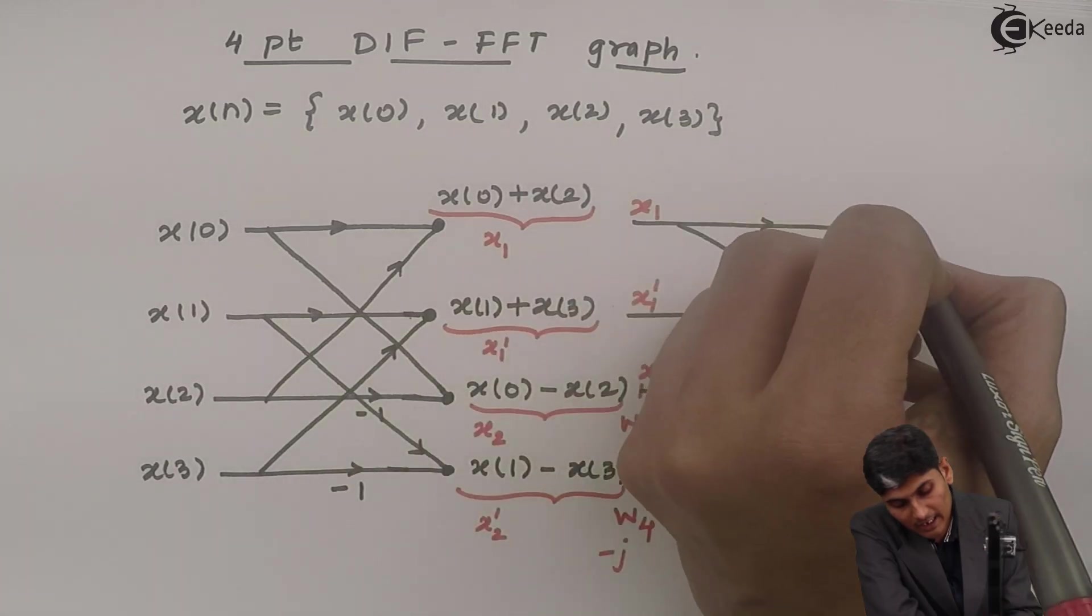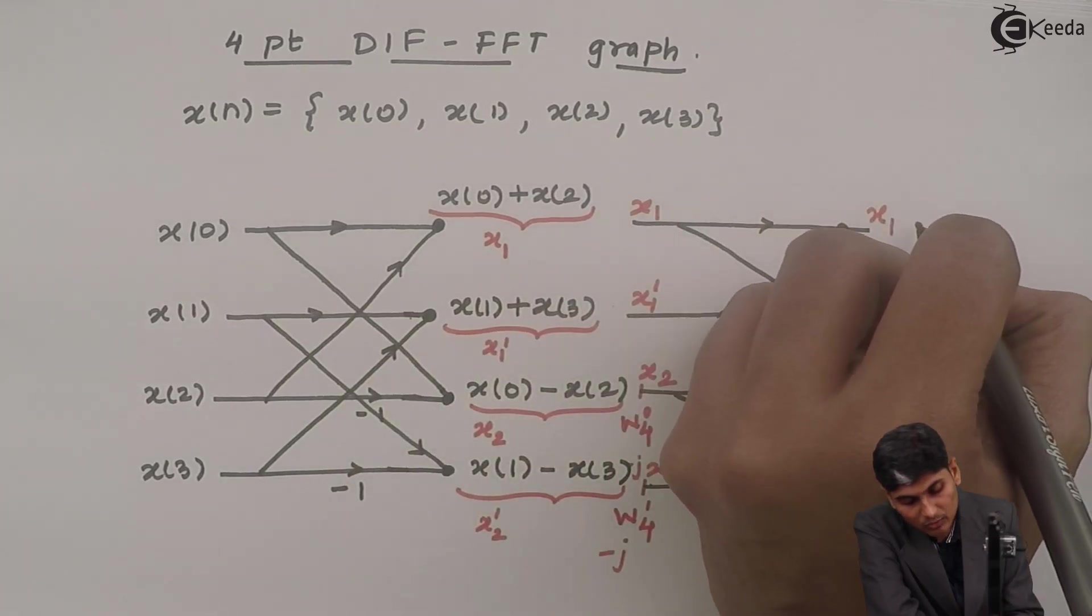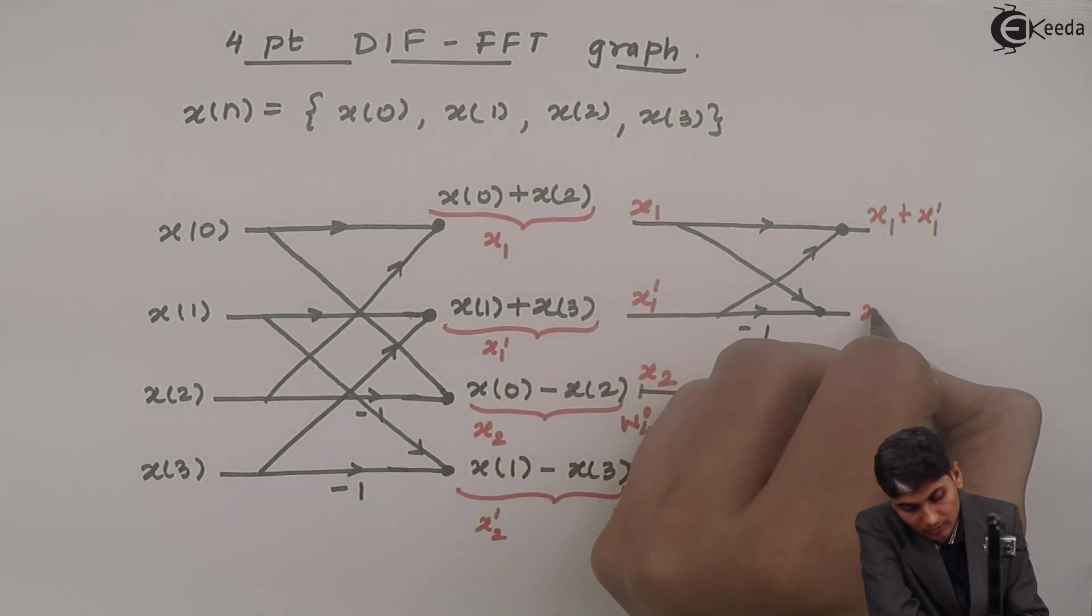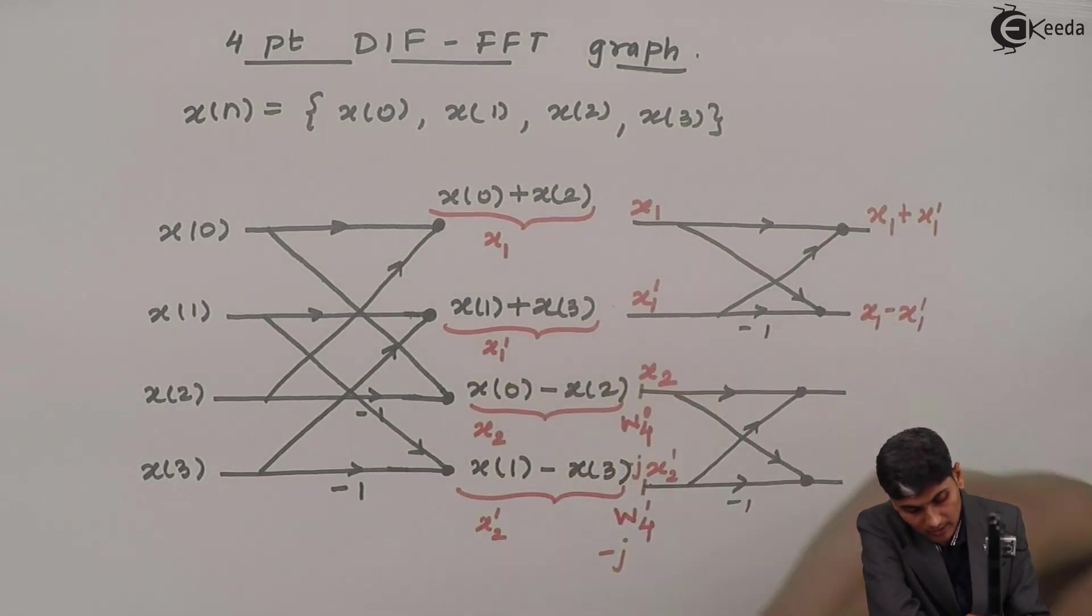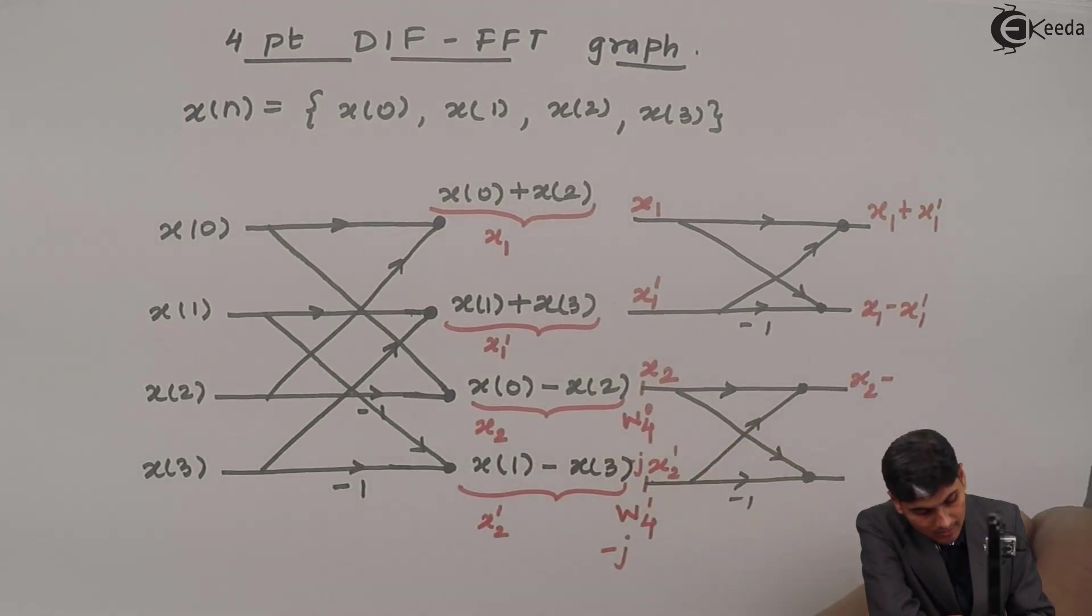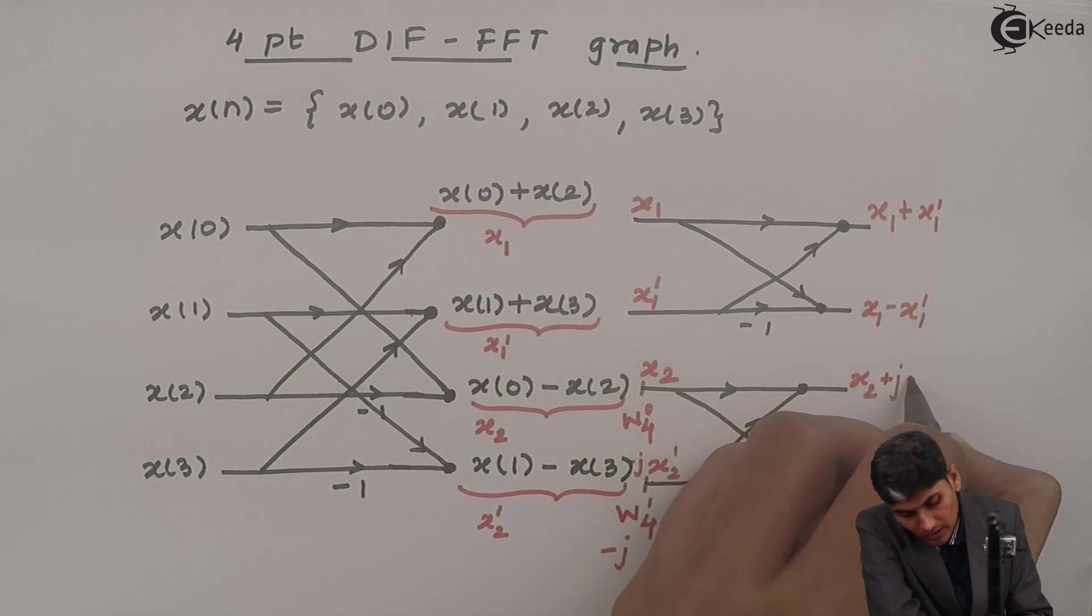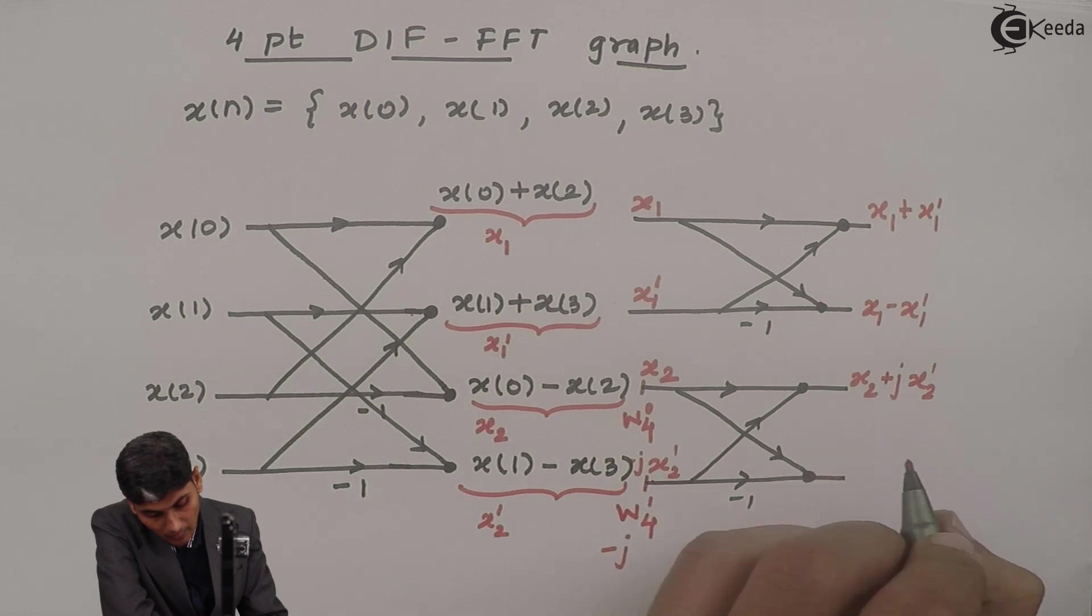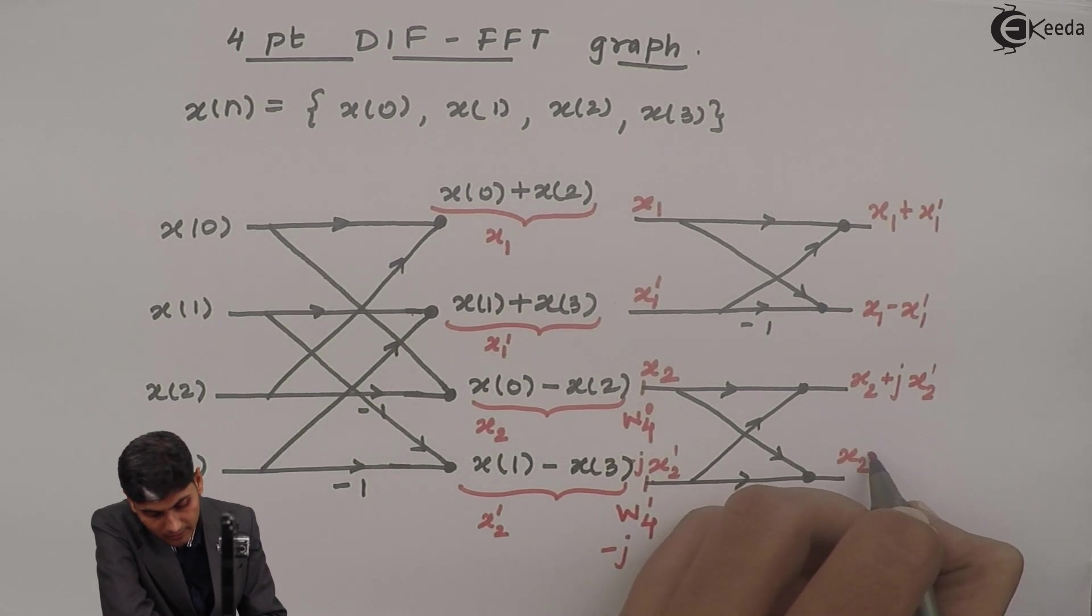Then when I add, the final result will be x1 plus x1 dash. And here it will be x1 minus x1 dash. Here it will be x2 plus j x2 dash. And here it will be x2 minus j x2 dash.